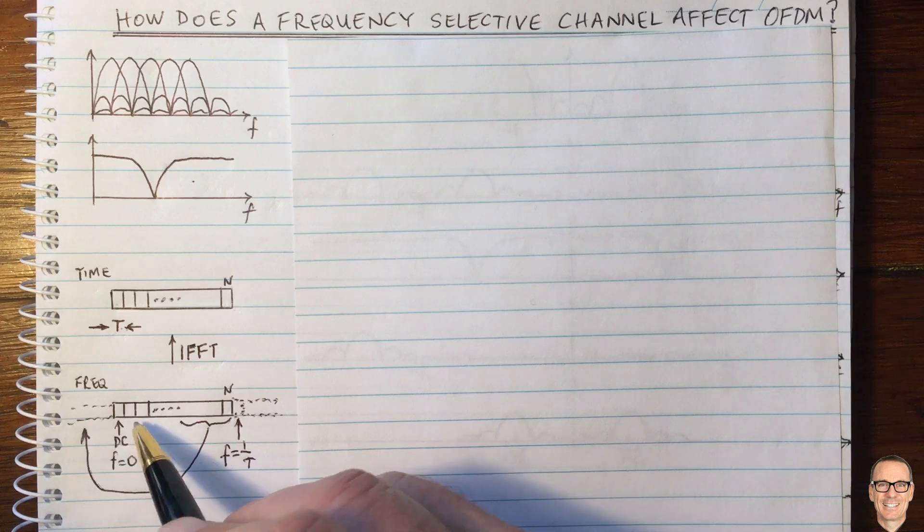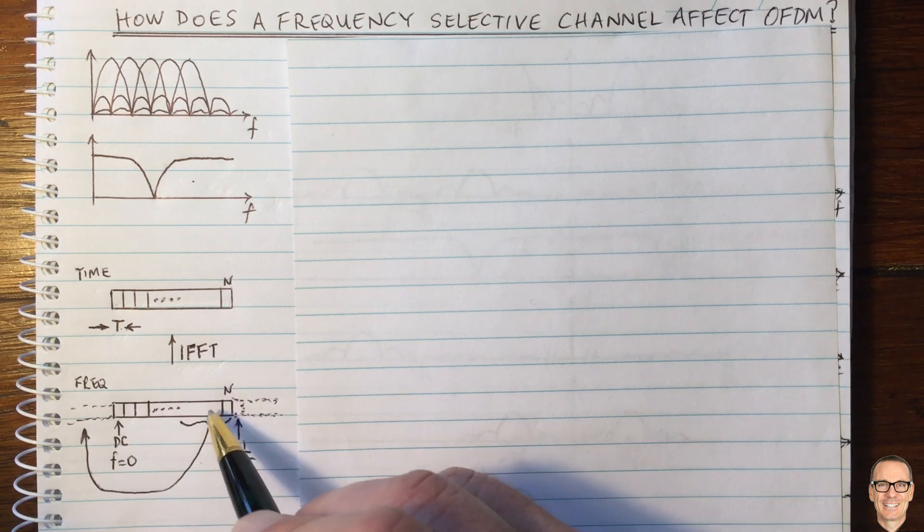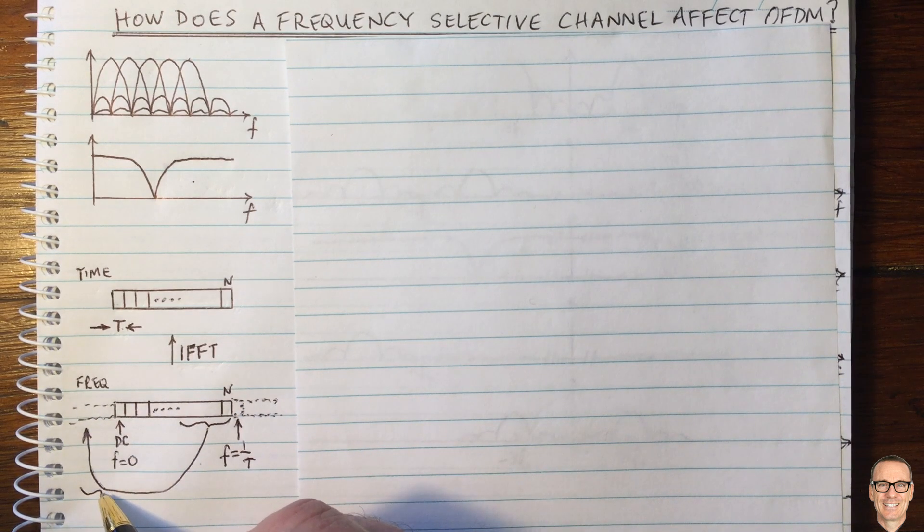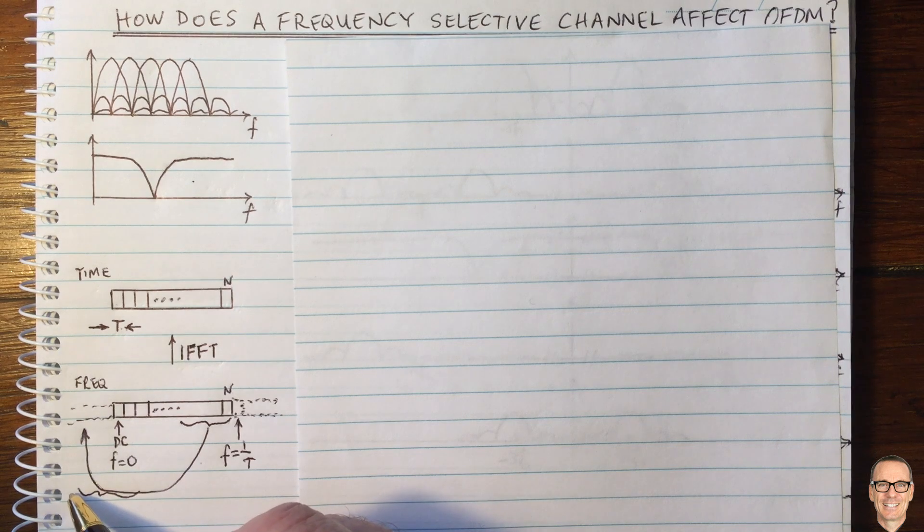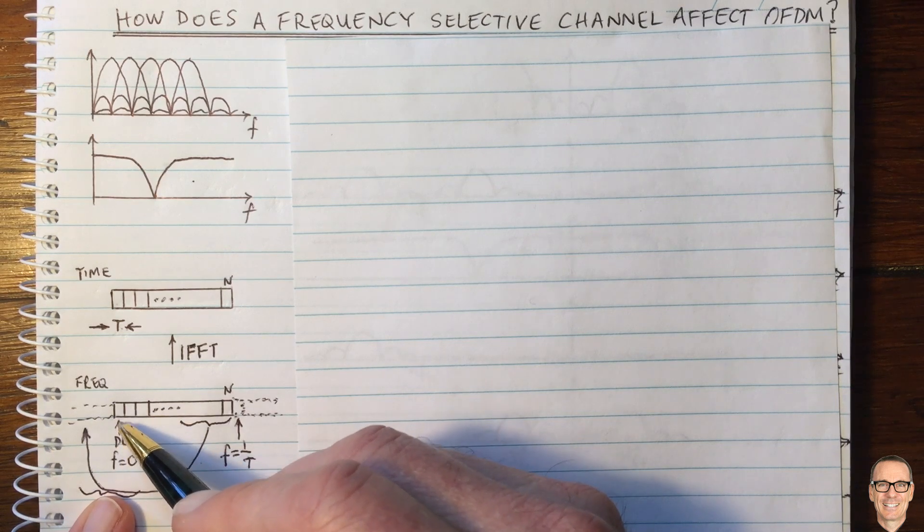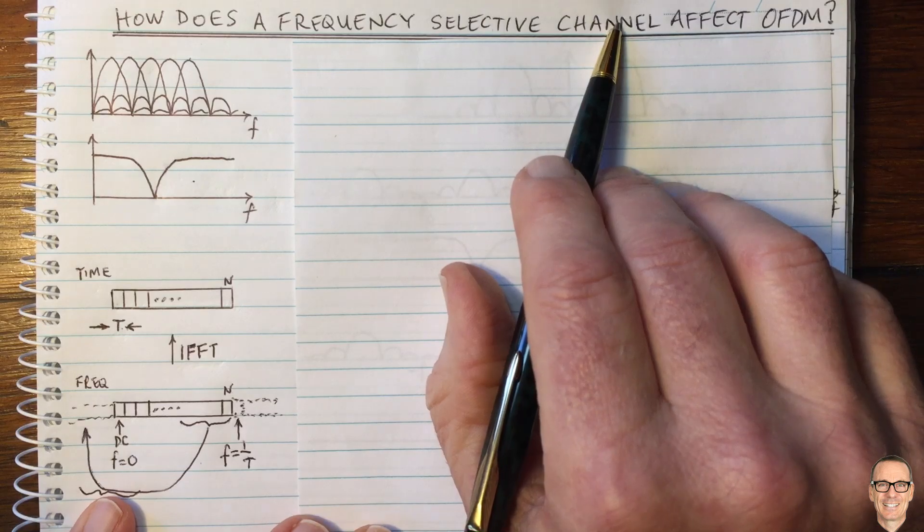So we can either plot in the frequency domain from zero up to here 1 on T, or we can plot this second half on the left-hand side and plot this portion here of the frequency band between negative and positive centered around zero. And that's going to be convenient for us to view it in this way to understand about the frequency selective channel effect.